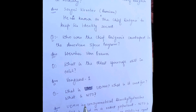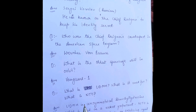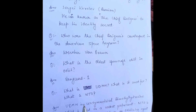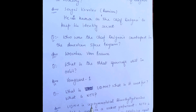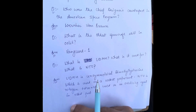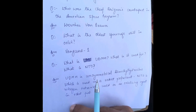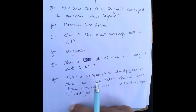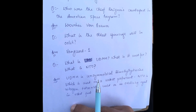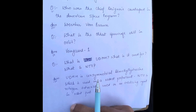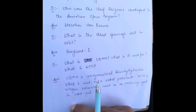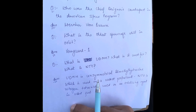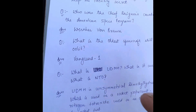What is UDMH, what is it used for, and what is NTO? UDMH is unsymmetrical dimethyl hydrazine, which is used as a rocket propellant. NTO is nitrogen tetroxide, which is used as an oxidizing agent in rocket fuel.